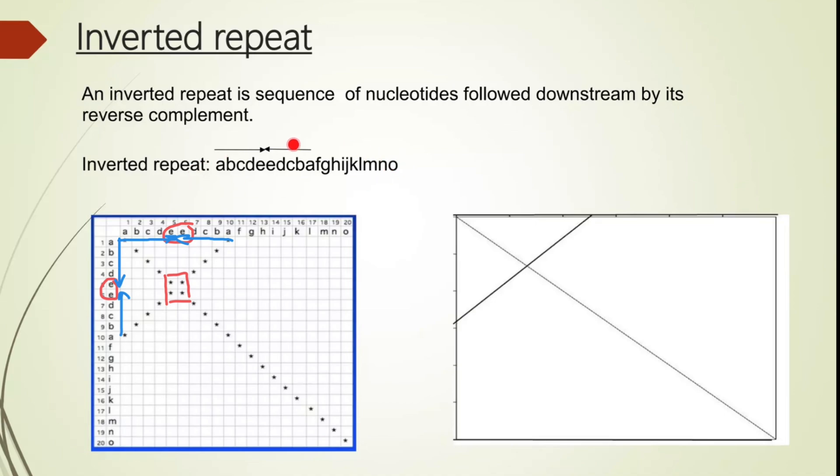When you, for example, take a look here, it would be hard to find such sequence here, which is, as you see here. But when we build a dot plot, it is very easy to recognize such sequence, such pattern.